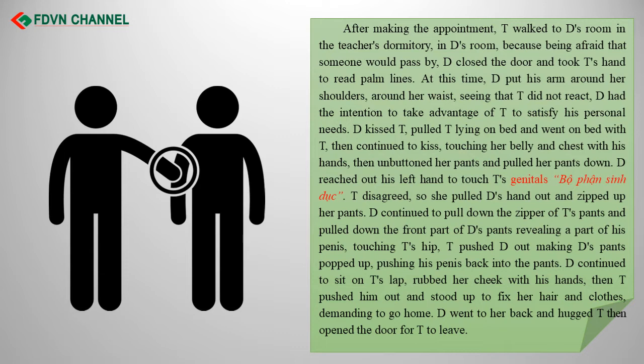D reached out his left hand to touch T's genitals. T disagreed and pulled D's hand out, zipping up her pants. D continued to pull down the zipper of T's pants and pulled down the front part of his own pants, revealing a part of his penis and touching T's hip. T pushed D out, making his pants pop up and pushing his penis back. D then sat on T's lap and rubbed her cheek, but T pushed him out, stood up to fix her hair and clothes, and demanded to go home. D hugged T from behind then opened the door for T to leave.